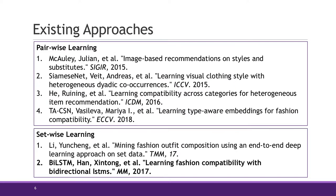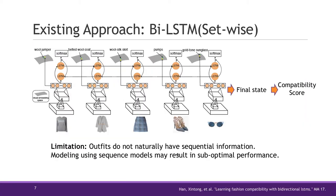For set-wise learning approaches, they try to capture the relationships among fashion items within an outfit. Typically, they fit a set of fashion items into their model and generate the final outfit representation. One representative method uses LSTM: the fashion items are fed into a bidirectional LSTM one-by-one at each timestamp, and the final hidden state is used as the representation of the entire outfit for compatibility prediction. Although LSTM can somehow capture underlying relationships and contextual information, outfits do not naturally have sequential information, so using sequential models may result in suboptimal performance.